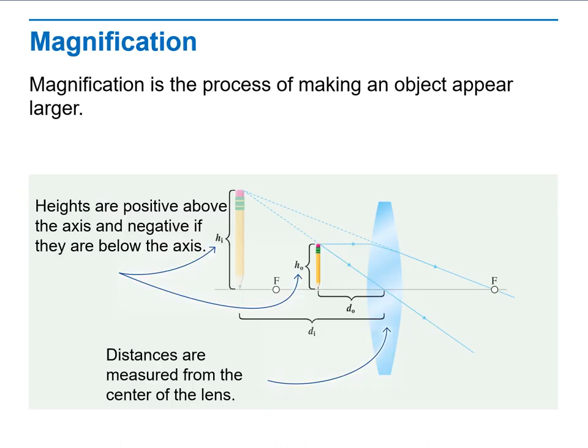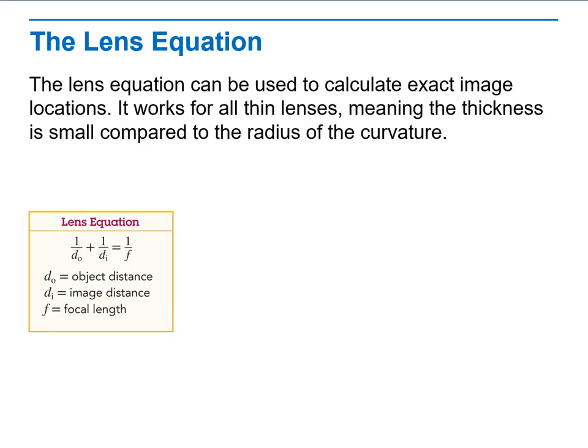Placing the object at different distances, at the focal point, before the focal and after the focal. What is the meaning of magnification and the lens equation, which is very important?